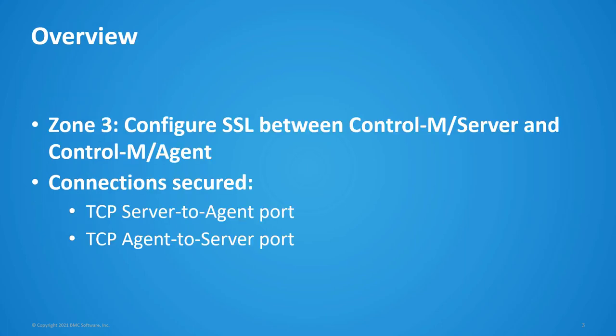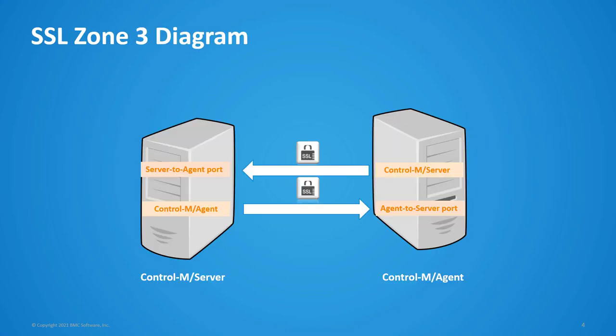We split the Control M communications in three zones. Zone 3 is related to the communication between the Control M server and the Control M agents. By enabling SSL in Zone 3, we will be securing the communication from the Control M server to the Control M agent and the opposite way, from the Control M agent to the Control M server. Here is a diagram of those communications: the communication initiated from the Control M server to the server-to-agent port listening on the Control M agent side, and the communication initiated from the Control M agent to the agent-to-server port listening on the Control M server side.